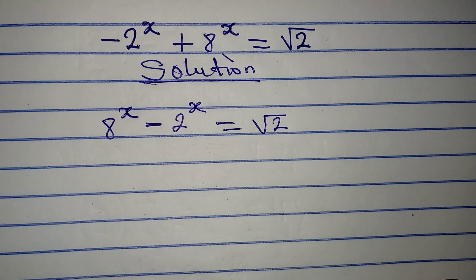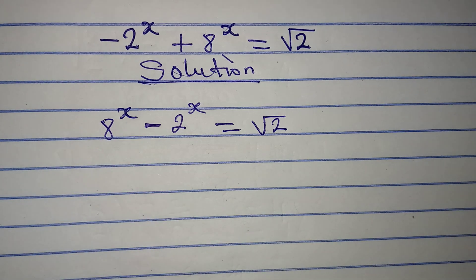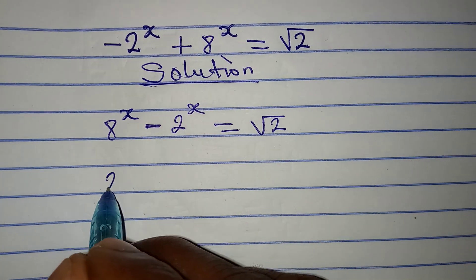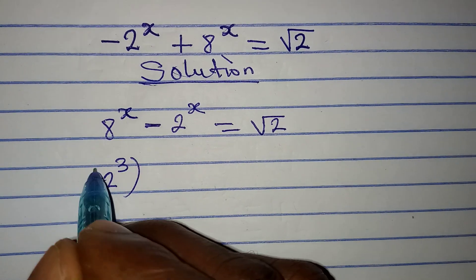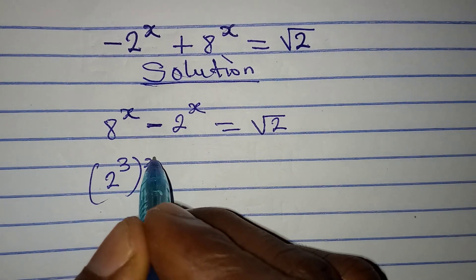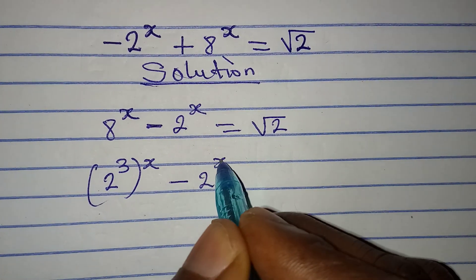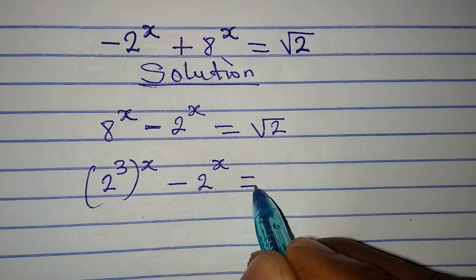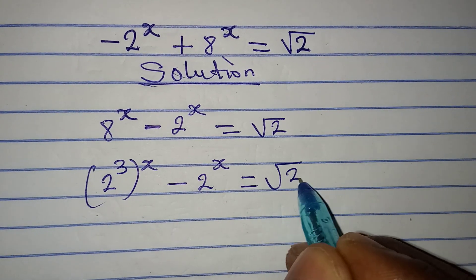The next thing is to break 8 into index form. So we have 2 to the power of 3, and this is to the power of x, then minus 2 to the power of x, equal to square root of 2.